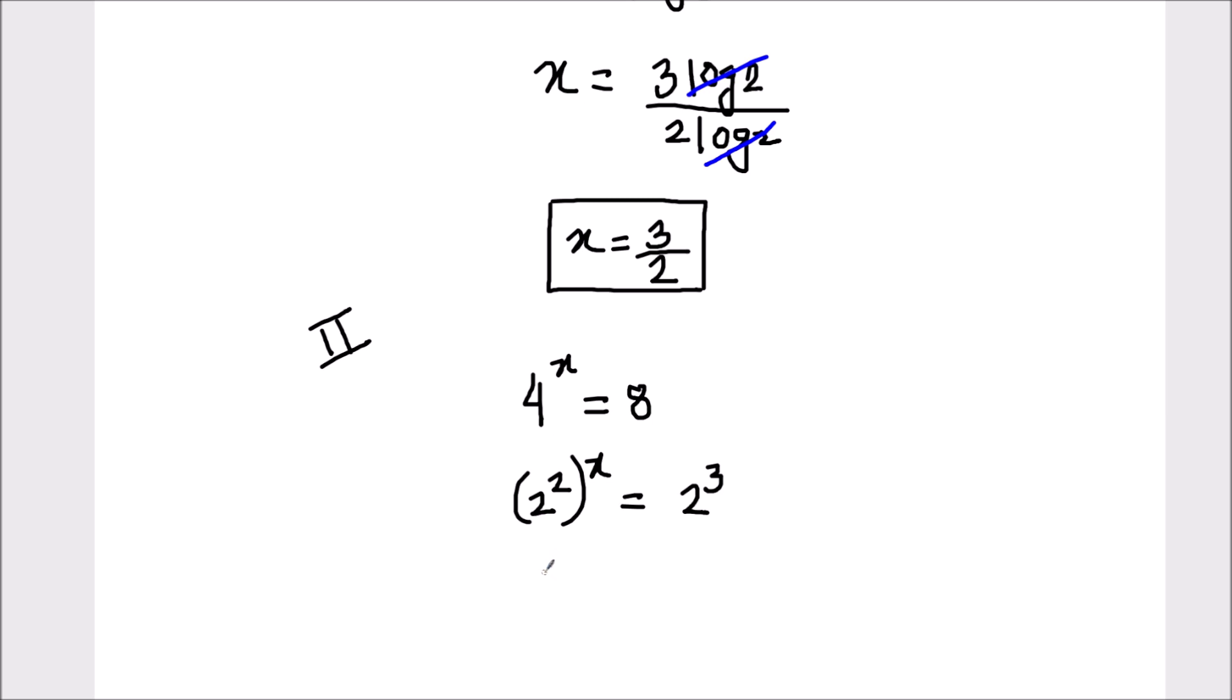So on the left hand side this will be 2 raised to power 2x equals 2 cube. This is by the law of exponent: a raised to power m whole raised to power n equals a raised to power m times n. The power inside the bracket gets multiplied by the power outside the bracket.